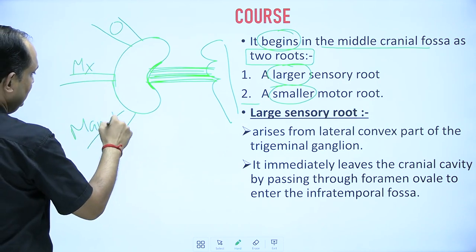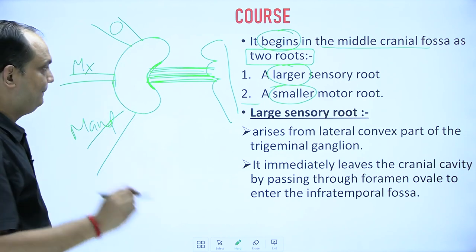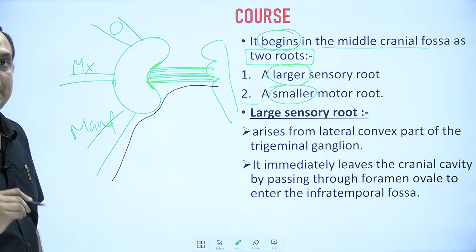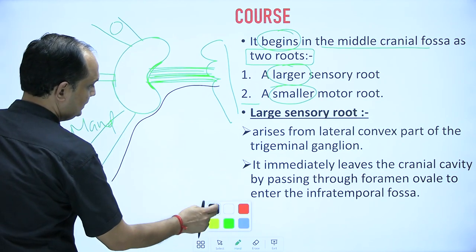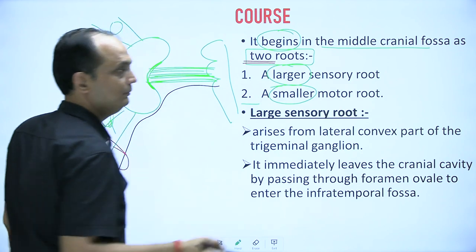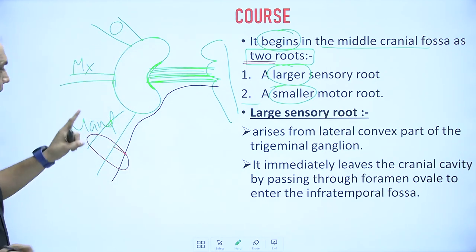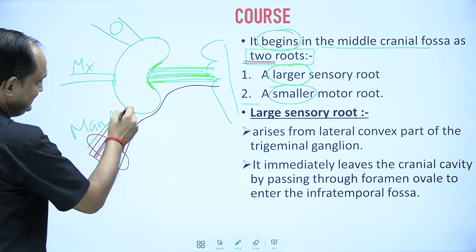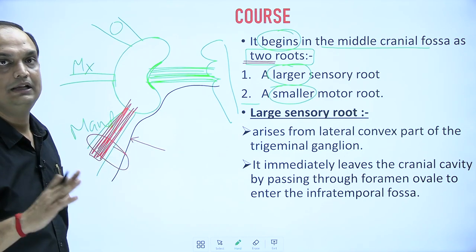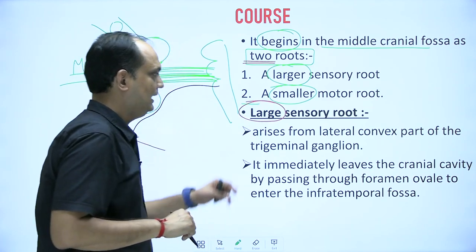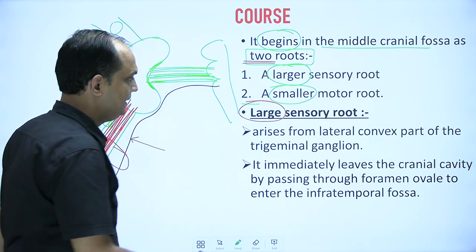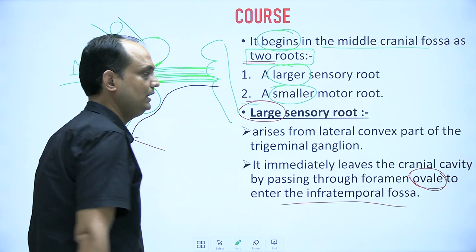All three branches from the anterior convex part are sensory in nature. The motor component runs as a separate part and later merges with the mandibular nerve. That is why there are two roots specifically for the mandibular nerve, not for the ophthalmic or maxillary. The sensory root is connected with the trigeminal ganglion, while the motor root is separate inside the cranial cavity. The large sensory root arises from the lateral convex part of the trigeminal ganglion and immediately leaves the cranial cavity by passing through the foramen ovale into the infratemporal fossa.